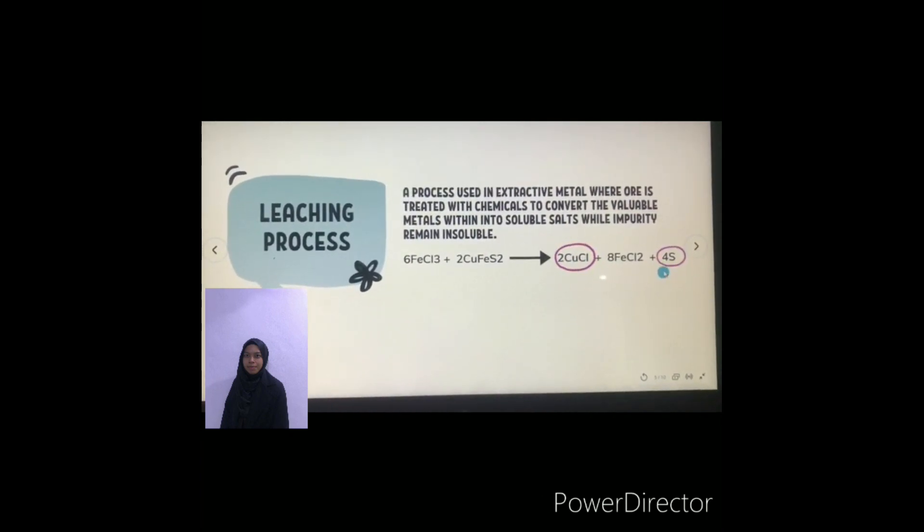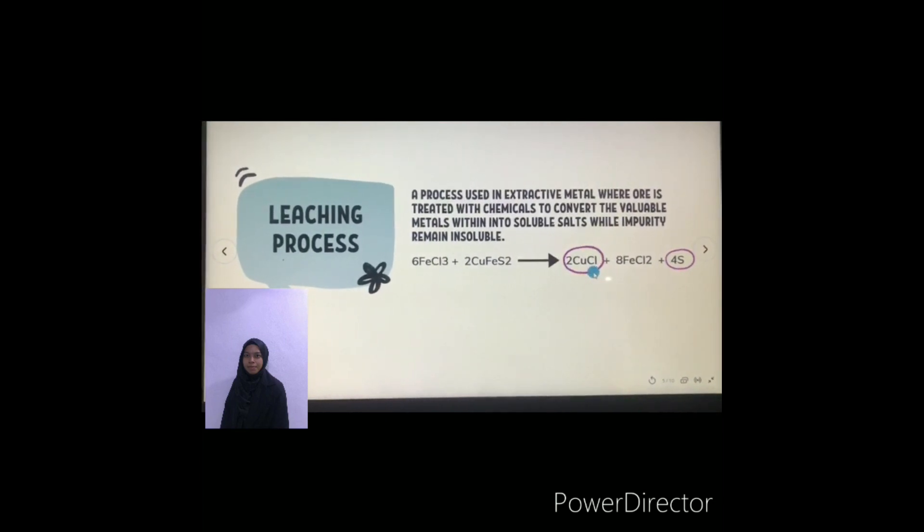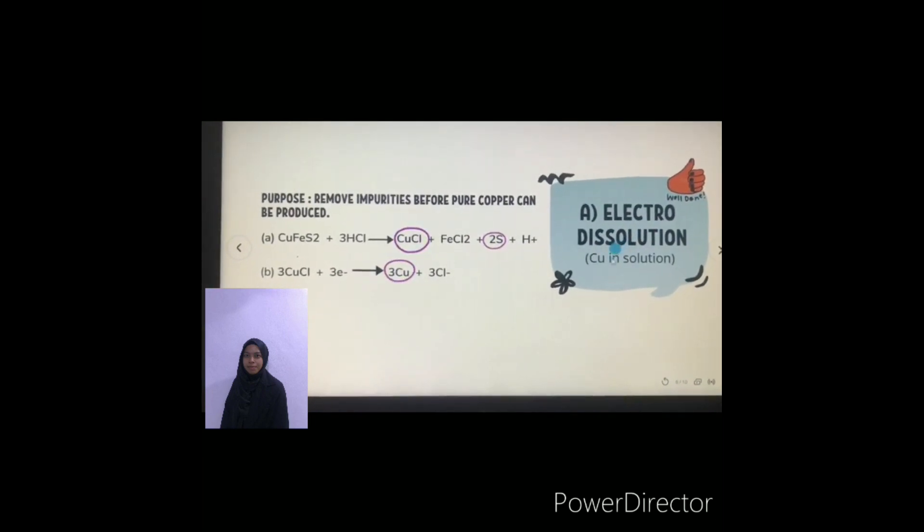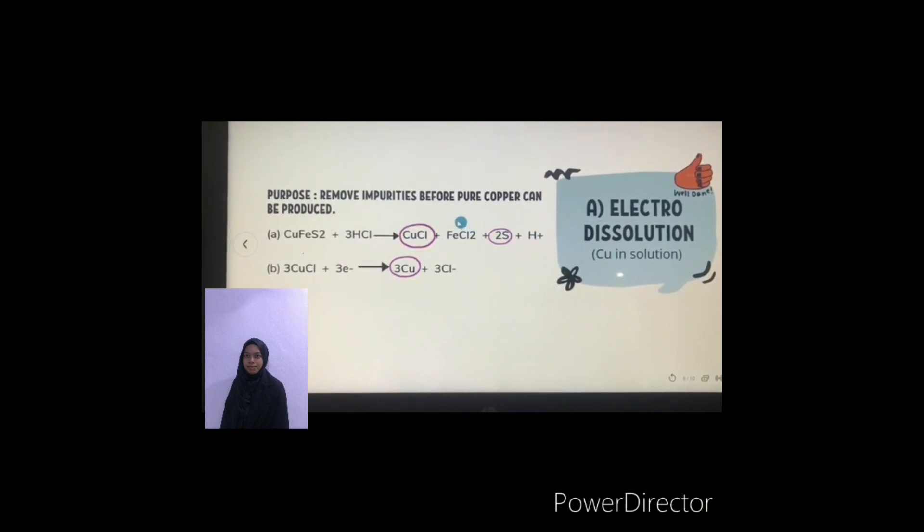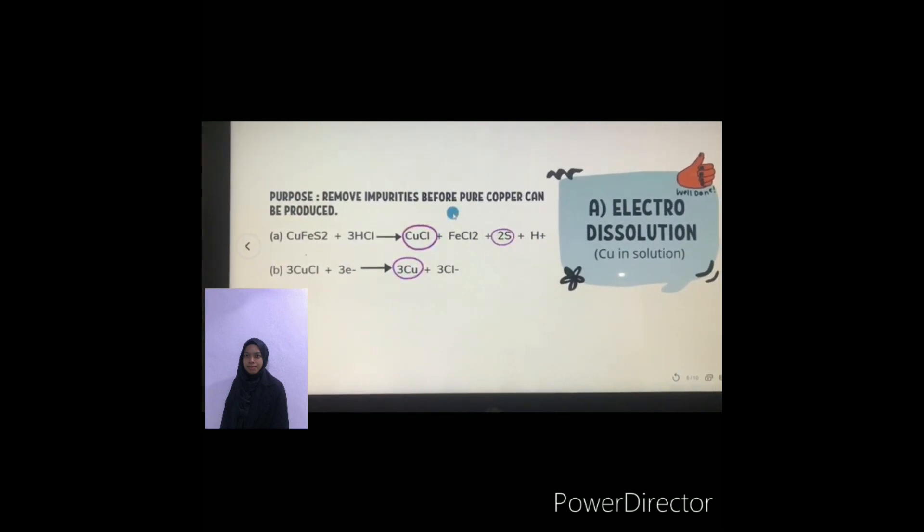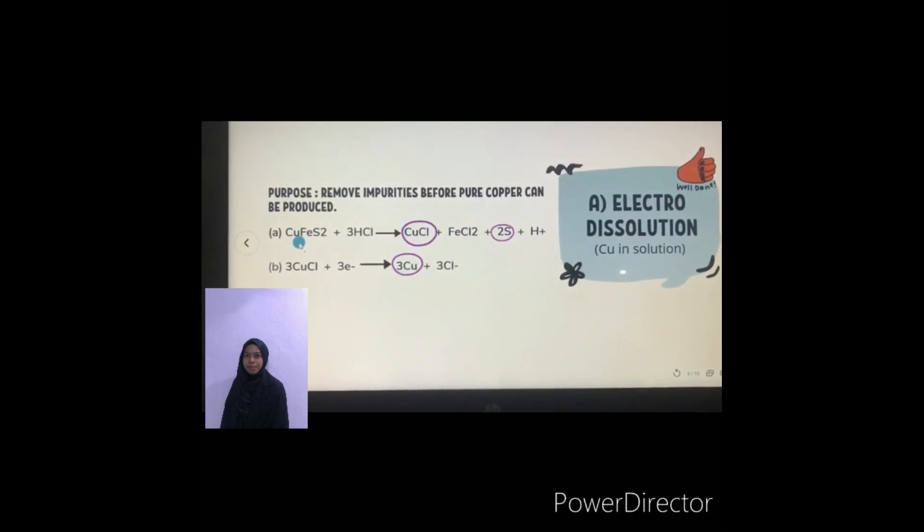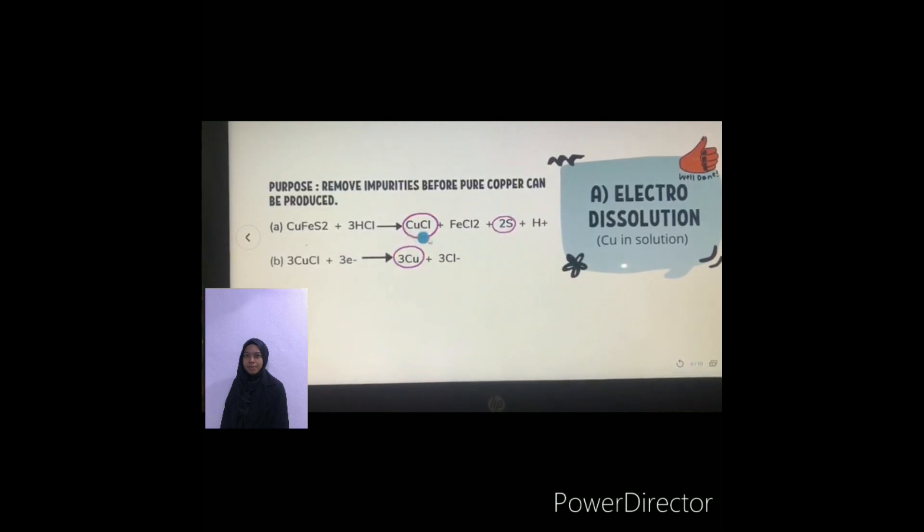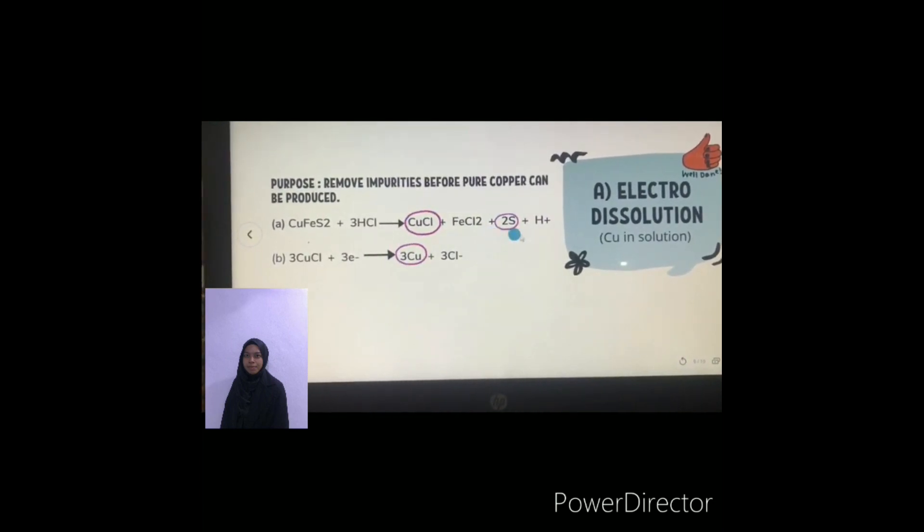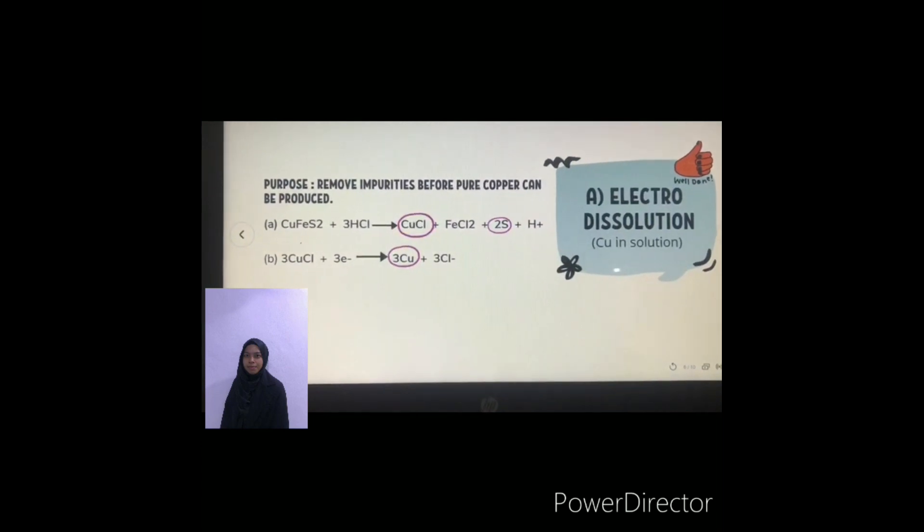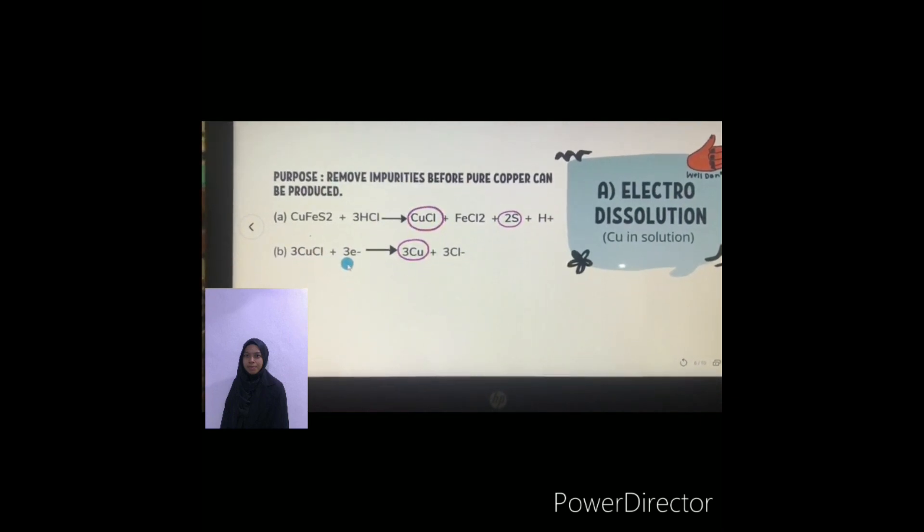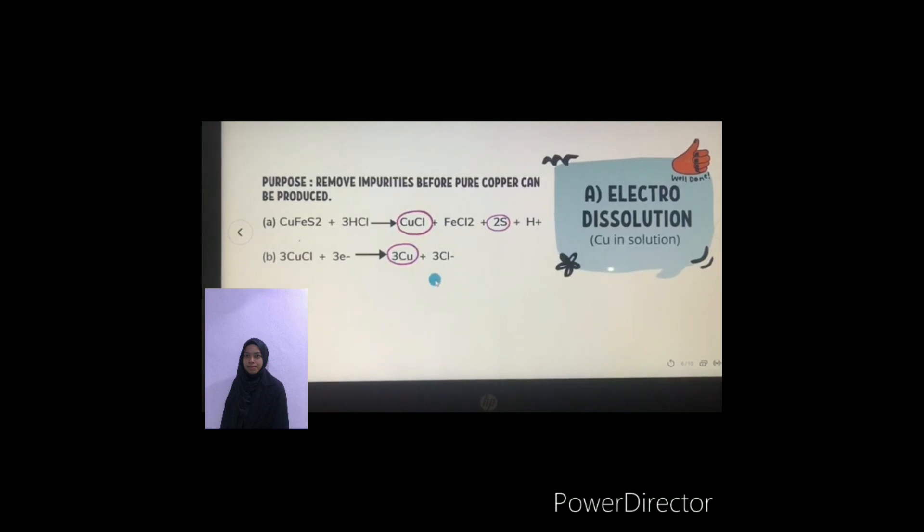The copper chloride and sulfur will undergo the next process. Copper chloride will undergo the electro-dissolution process, which means copper chloride is in solution. The purpose of electro-dissolution is to remove impurities before pure copper can be produced. The first chemical equation that involved in this process is chalcopyrite will be mixed with hydrochloric acid to produce copper chloride, ferrous chloride, sulfur, and hydrogen ions. The second one is copper chloride will undergo the next process, which will receive electrons and produce copper.